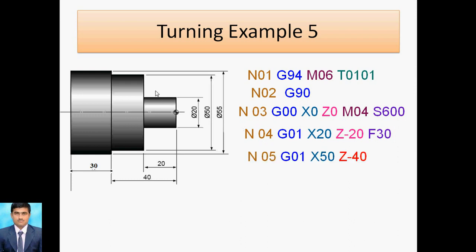Fifth block: tool moves from this point to the next. Major diameter is 50, so X50, G01 linear interpolation, Z minus 40 — that hole depth is 40. Sixth block N06: G01 linear interpolation, X55 final diameter, Z minus 70 (40 plus 30). This completes the final operation.